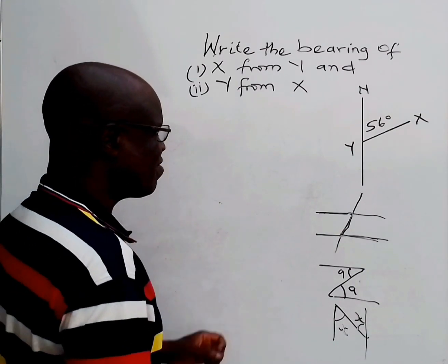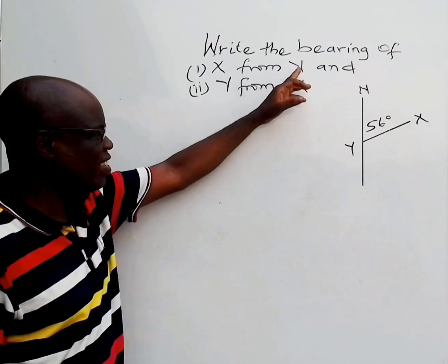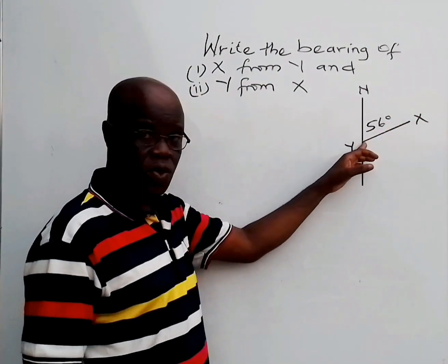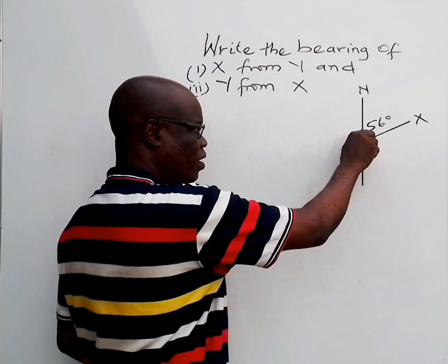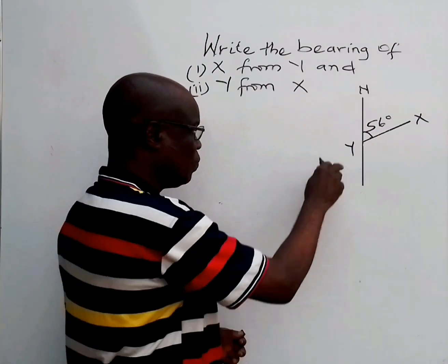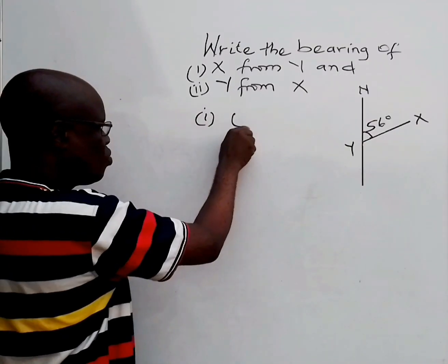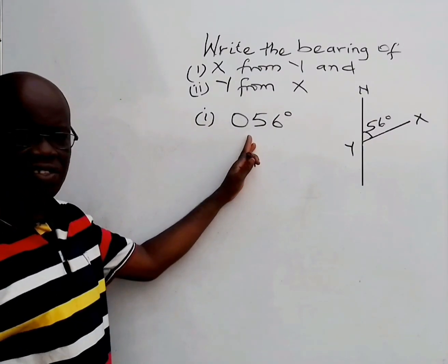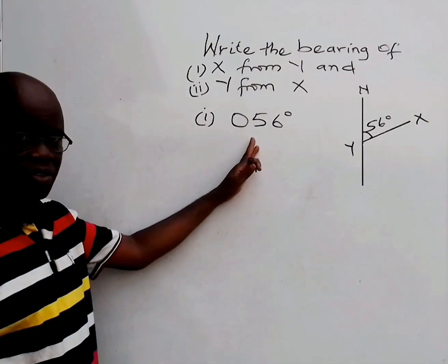Now let's look at this one. What is the bearing of X from Y? This is X. What is the bearing of this X from Y? If you look at it from the north to this place, that is 56 degrees. So 56 degrees is the answer for that. You write it using the three-digit bearing, or true bearing method.